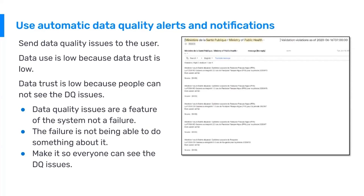Data quality issues are not really a failure of the system — they're a feature of any information system. The failure is not being able to detect them and to do something about them. We have to appreciate that every information system, DHIS-2 or otherwise, is going to have data quality issues. Using DHIS-2, when there are issues, they can be automatically detected and sent in alerts or notifications to people who can do something about them.